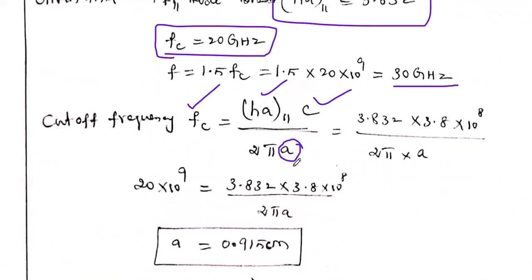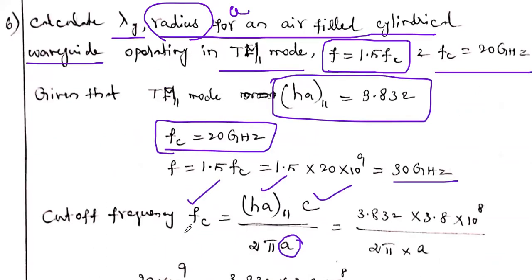In this problem we rearranged the cutoff frequency formula to calculate the radius. We have now discussed three circular waveguide problems in this video. If you want to learn about rectangular waveguide problems, parallel plane waveguide problems, and remaining problems, links are in the description box. You can also find them in the 'Transmission Lines and RF Systems' playlist on my channel. Thank you, and we will meet in the next video.